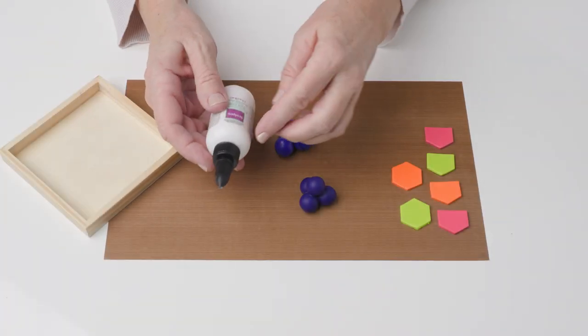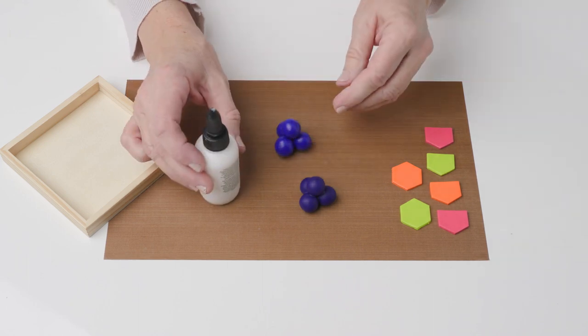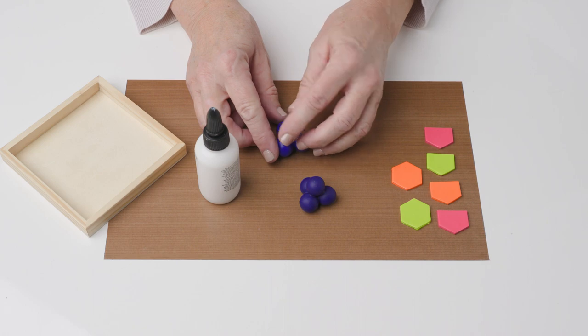Oven-baked clay adhesive comes in a two ounce bottle and it has a precise flow control cap. One way I like to use it is with raw to raw clay.